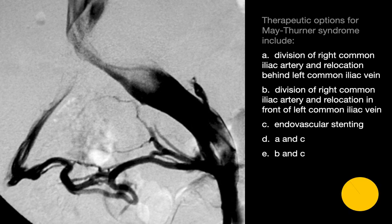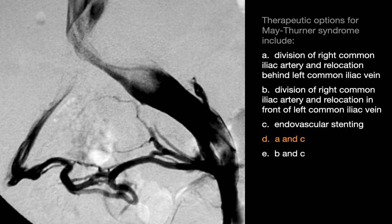Treatment options for May-Thurner syndrome include division of the right common iliac artery and relocation behind the left common iliac vein, or endovascular stenting.